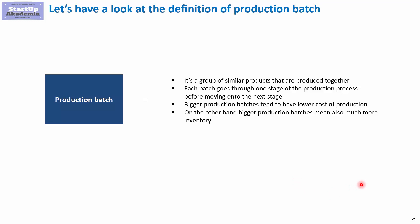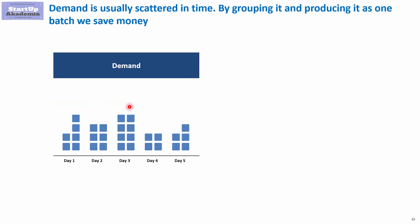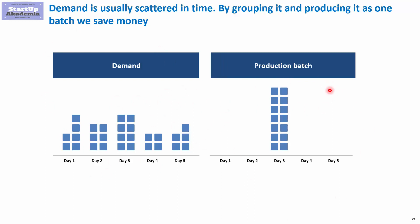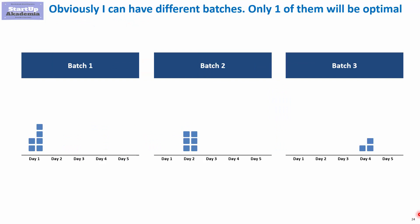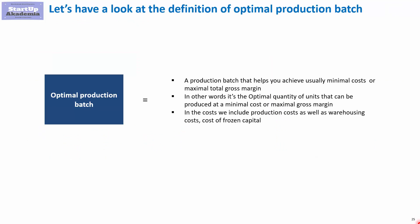Let's have a look at the example of a production batch. Demand is usually scattered in time, but when it comes to production, we want to group orders into fewer instances and make them somewhat independent of demand — that's why we need a production batch. You can have a different size of batch, but only one of them will be optimal. When we talk about the optimal production batch, we mean the batch that helps you achieve minimal cost or maximal total gross margin. We'll devote a lot of attention to this in the course and show you many methods to calculate the optimal production batch.